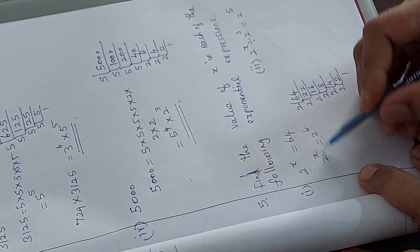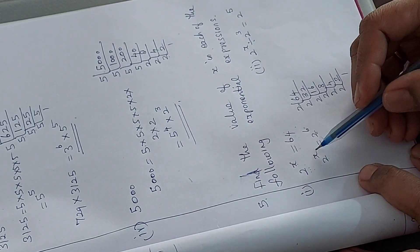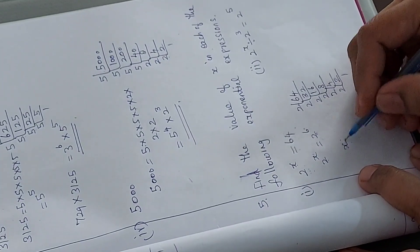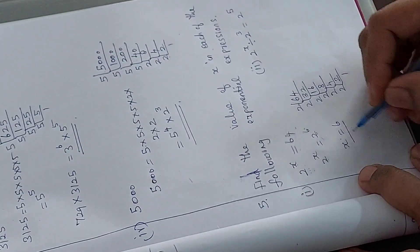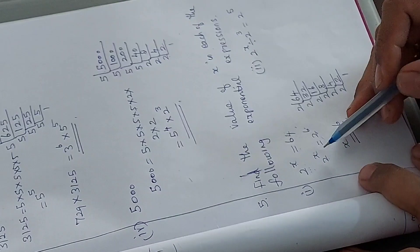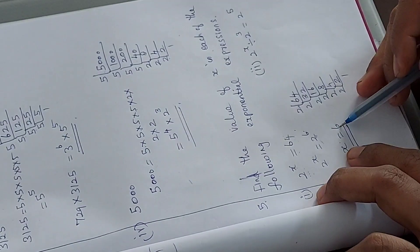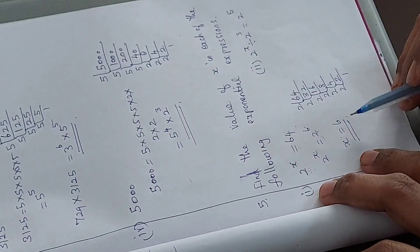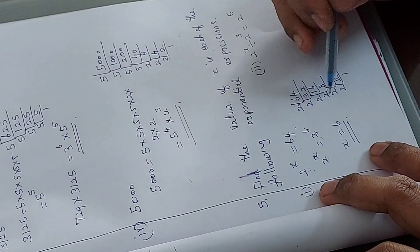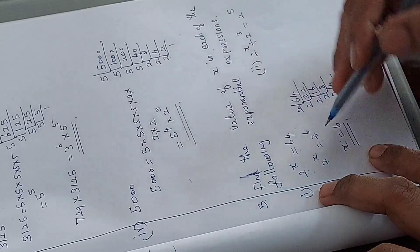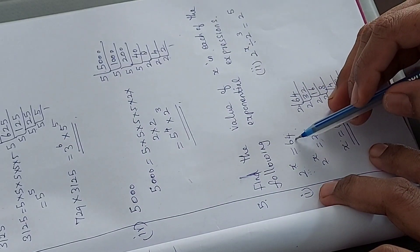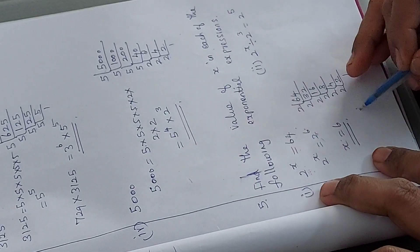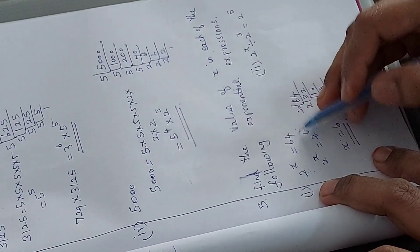Since the bases are the same, we can equate the powers: x equals 6. So our answer is x equals 6. If x equals 6, then 2 to the power 6 equals 64. We are multiplying 2 six times, which gives us 64.